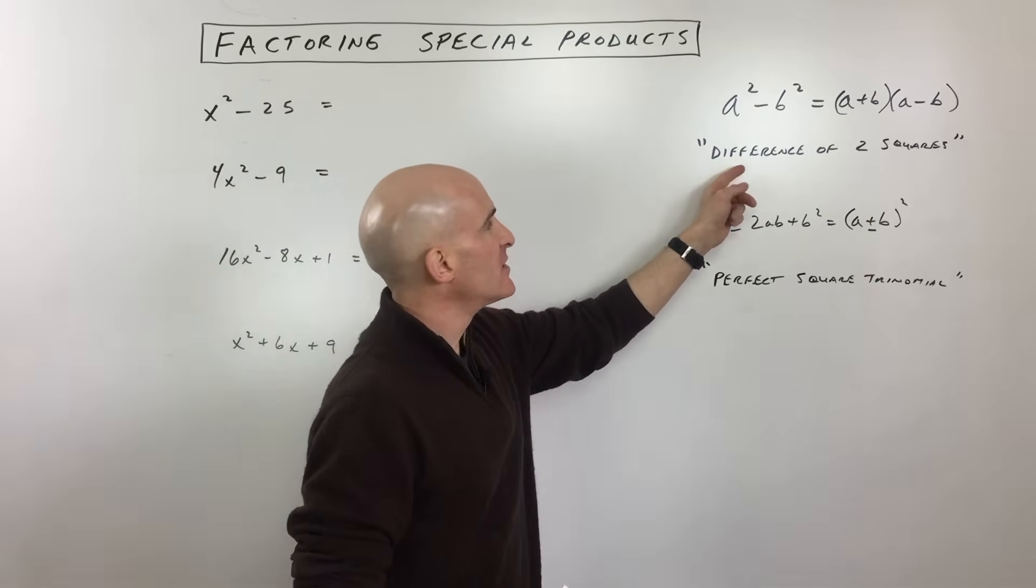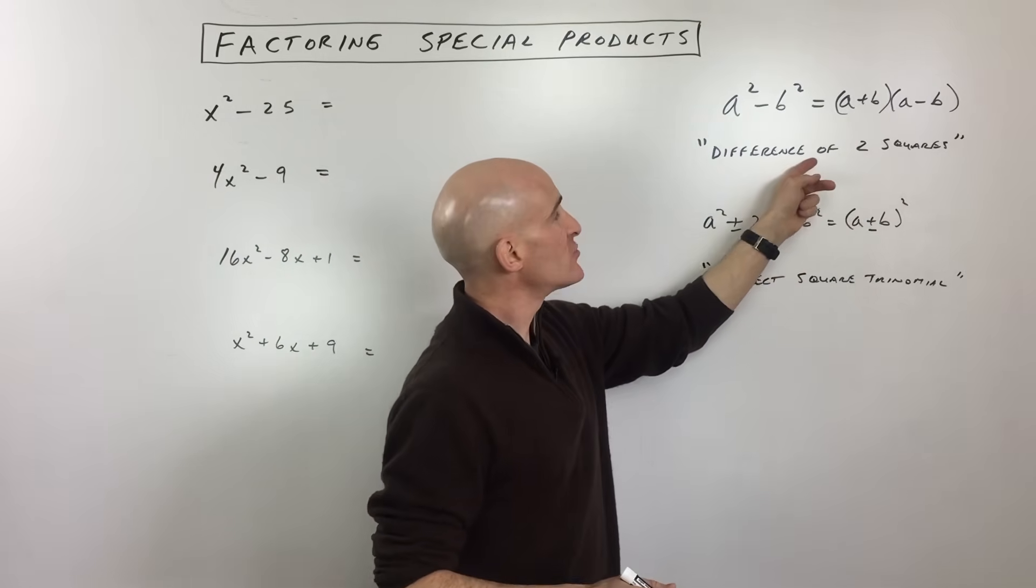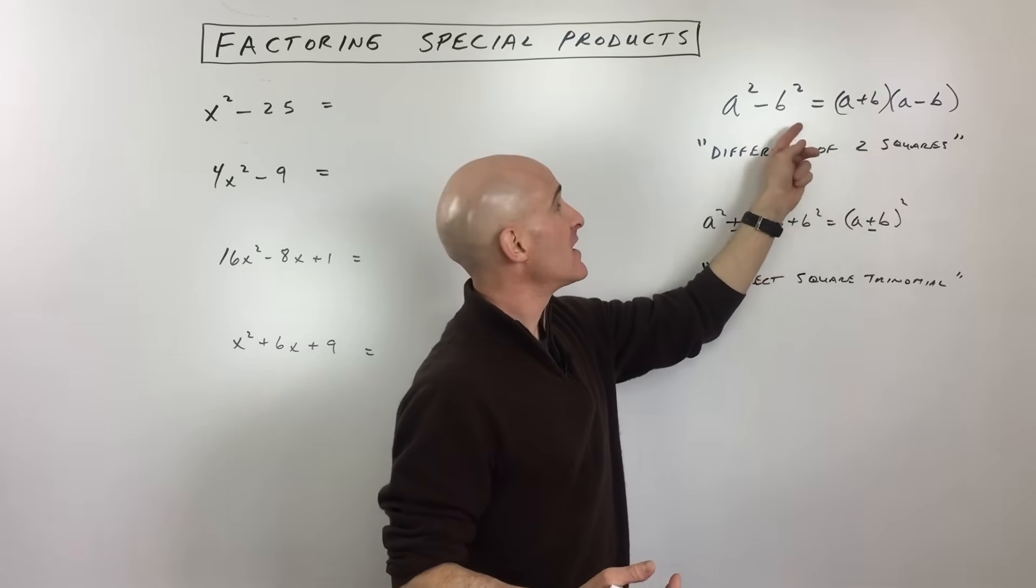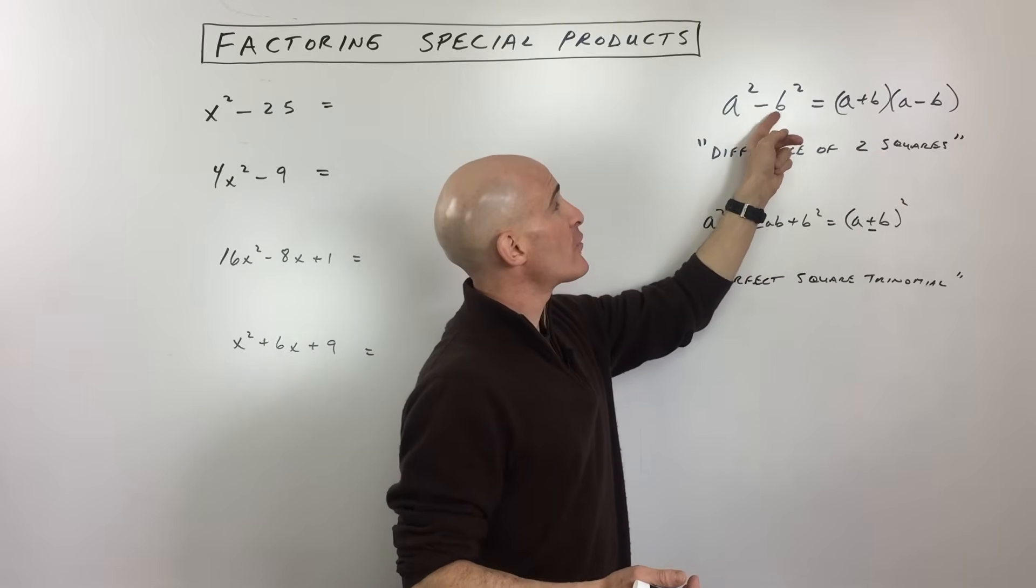First, we're going to talk about the difference of two squares. Difference of two squares is just like it sounds - it's a difference, meaning you're subtracting two perfect squares.